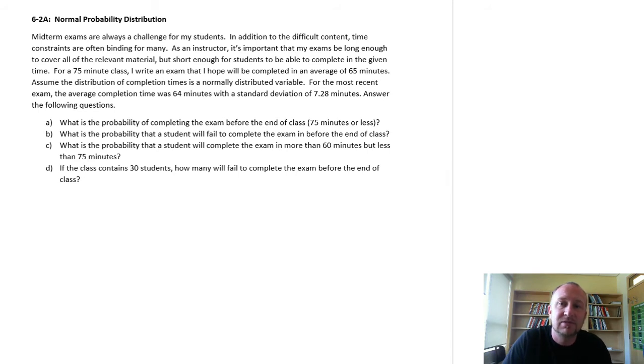But I have to ensure that students will have the opportunity to finish the exam within the allotted time. So what I often do if I have 75 minutes, I'll try to shoot for an exam that will have an average of about 65 minutes. But there's that distribution around that completion time. There's some who finish very early, there's some who take a lot longer to complete the exam. So assume that it's normally distributed. My most recent exam, I had an average completion time here of 64 minutes, and I had a standard deviation of 7.28 minutes. So we're describing the location and the shape of a distribution.